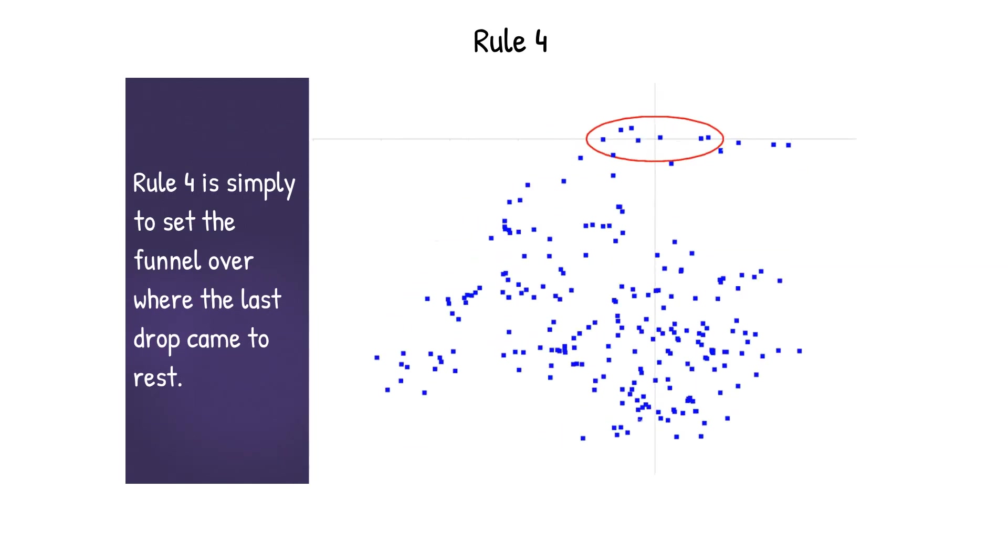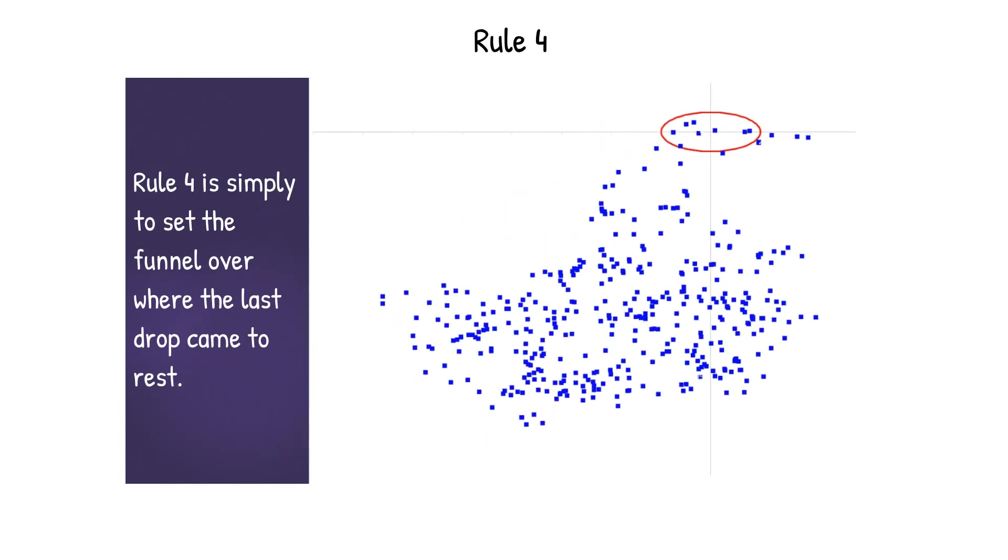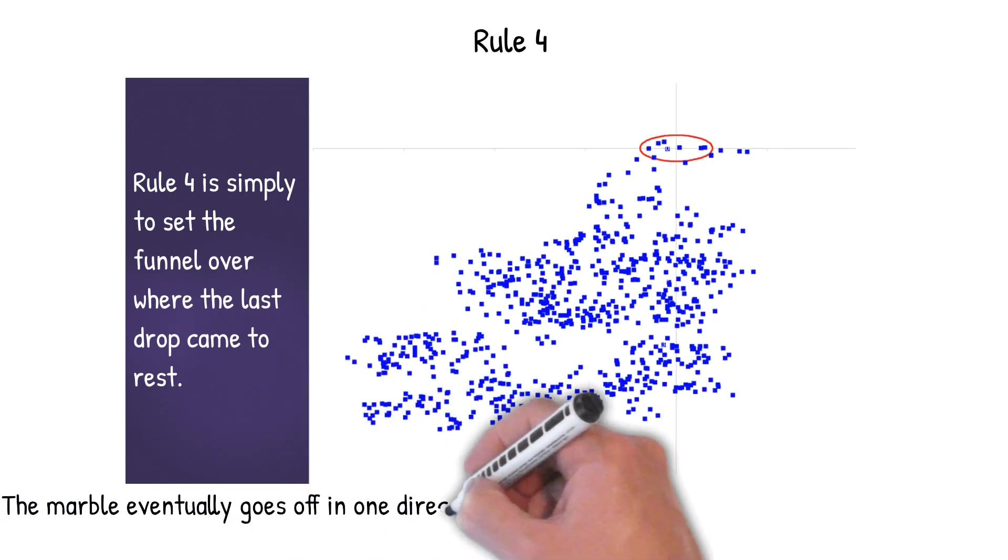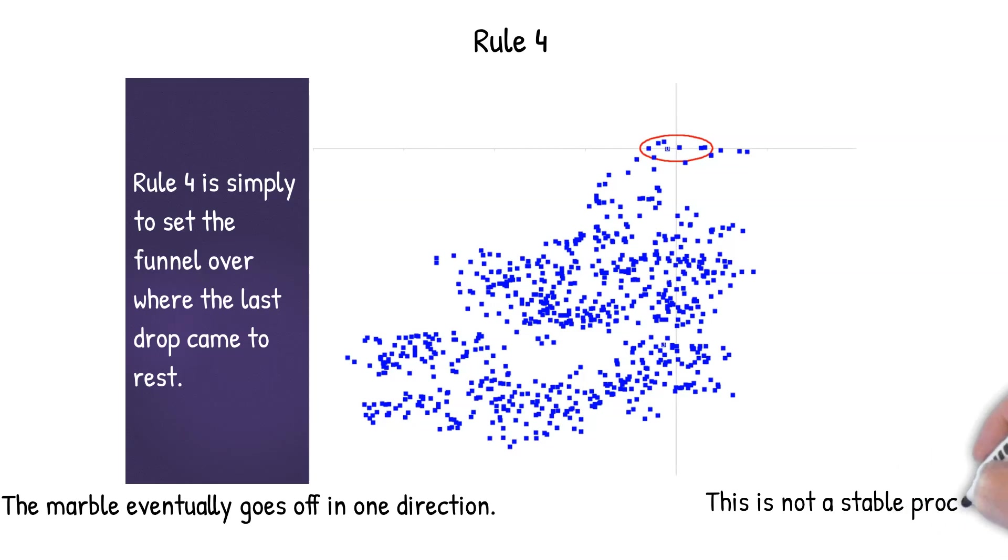And then let's move to rule four which is simply to set the funnel over where the last drop came to rest. And here's the simulation and what you can see is it's going off in one direction. And this is what happens with rule four. The marble eventually goes off in one direction. It's not a stable process and it doesn't return.